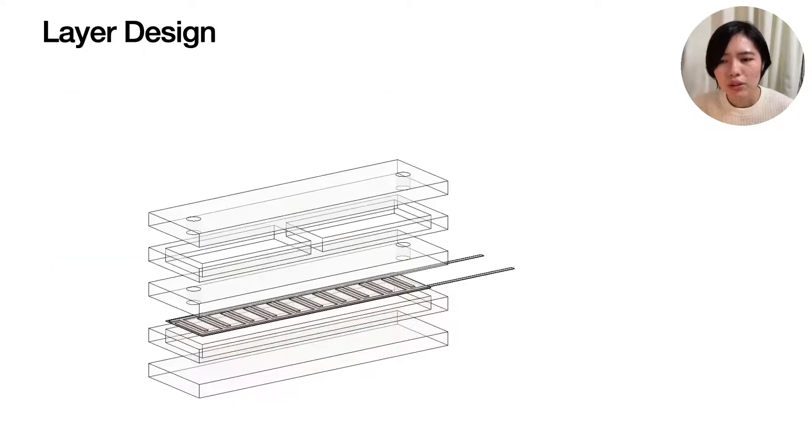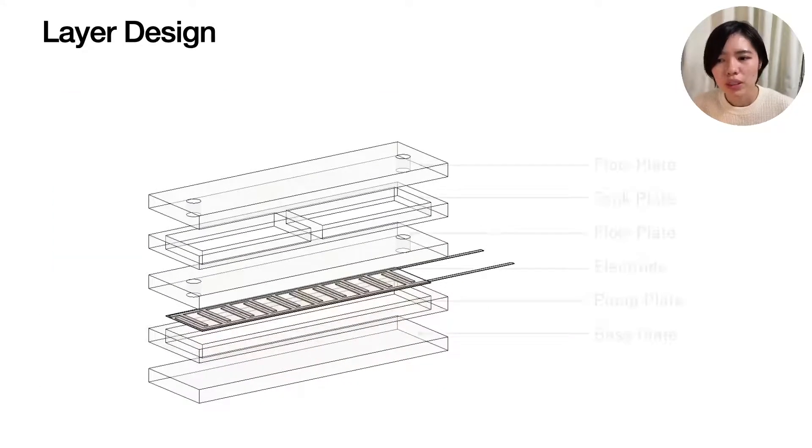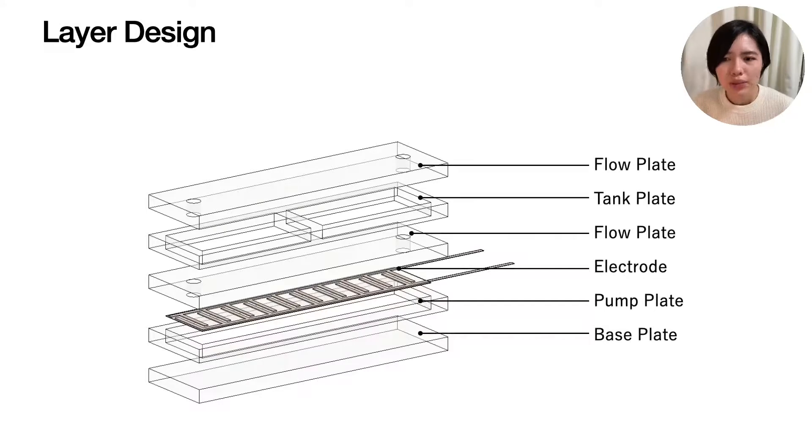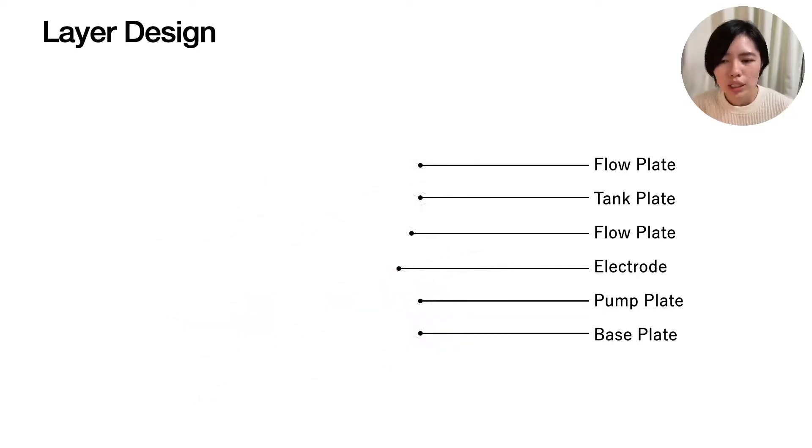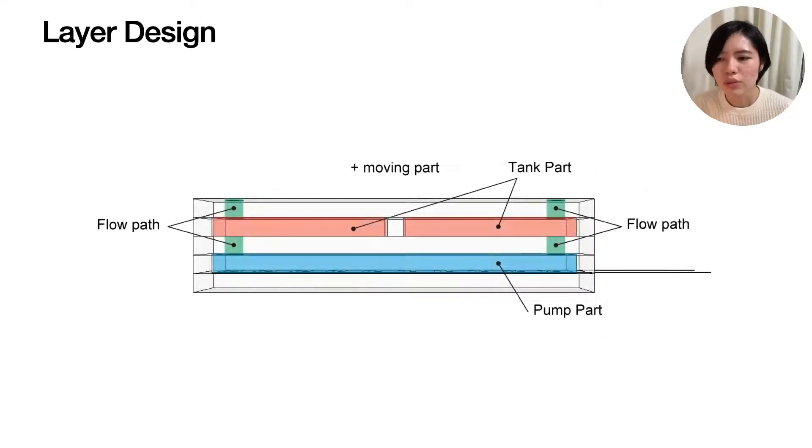The basic structure of the layer pump consists of five plates. Each plate has holes in appropriate positions, and the outer shape can be designed into any flat shape. These plates are stacked and grooved together to create the pump, tank, and flow path inside the object.